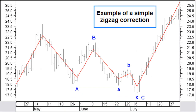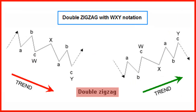Example of a simple zigzag correction with a lower degree extension zigzag correction in wave C. To denote a double zigzag we use W, X, Y instead of the standard ABC, X, ABC Elliott notation. For the triple zigzag this becomes W, X, Y, X, Z. This is a more consistent way of notation because more zigzags of a lower order are connected together by a higher order wave.